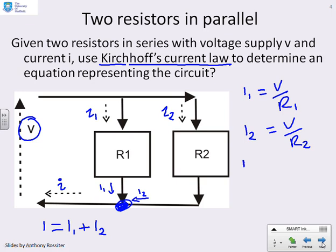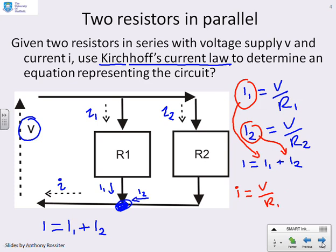And if I just remember what I had down below, I always had I equals I1 plus I2, then you'll see the next step. I can take this I1 and put it in here, and take this I2 and put it in here, and what I will get is I equals V over R1 plus V over R2. So that will be an equation which models this parallel circuit.